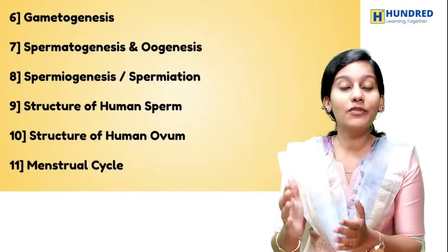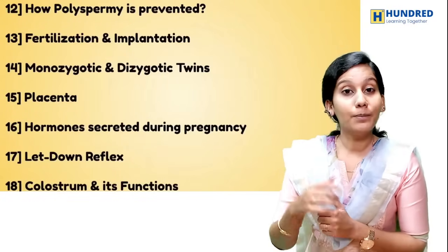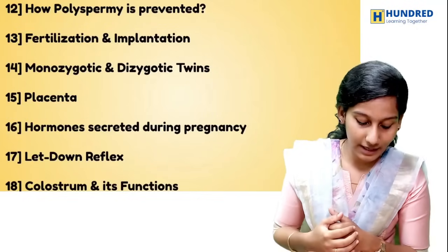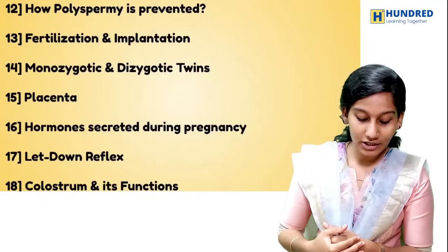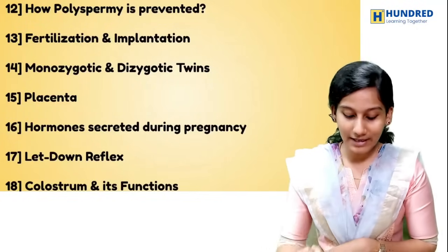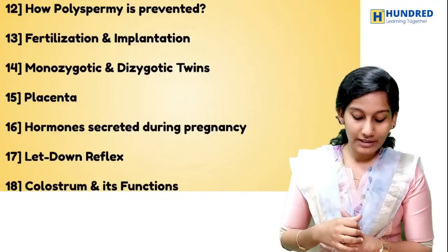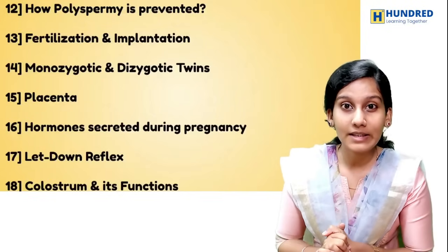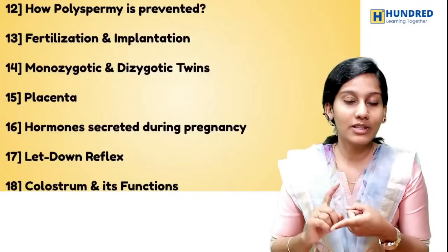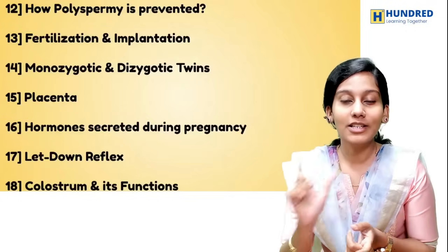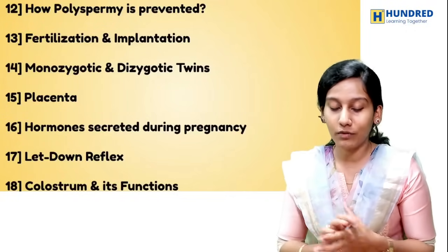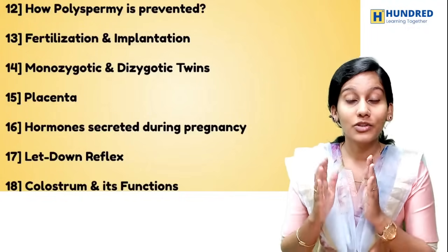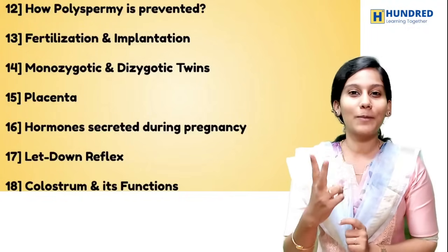Cover the menstrual cycle and its different phases, how polyspermy is prevented, fertilization and implantation, and the difference between monozygotic and dizygotic twins. Also study hormones during pregnancy — there are chances of 1-mark questions. Make a table listing the hormones, let-down reflex, colostrum, and their functions. These are the important questions from chapter 2.